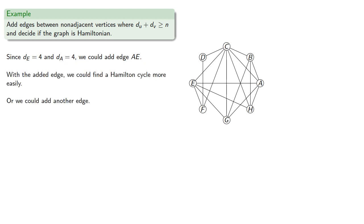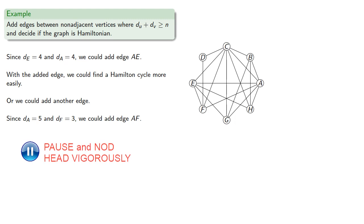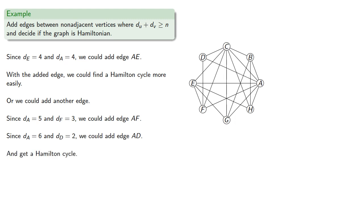Or we could add another edge. Since the degree of A is 5 and the degree of F is 3, we could add edge AF. Since the degree of A is now 6 and the degree of D is 2, we could add edge AD, and at this point we can get a Hamilton cycle.